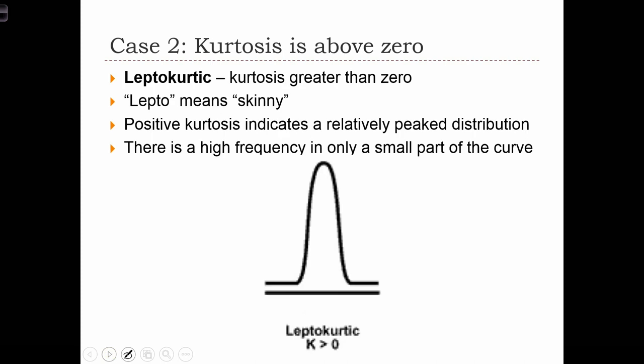If kurtosis is greater than 0, we call the curve leptokurtic. Lepto is Greek for skinny, and you can see that this distribution is tall and skinny. Positive kurtosis indicates a relatively peaked distribution. There is a high frequency in only a small part of the curve.